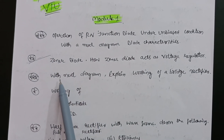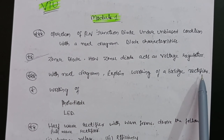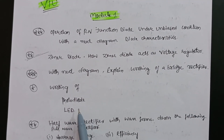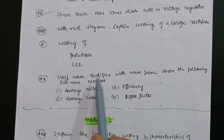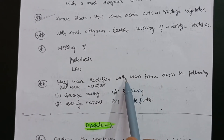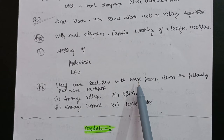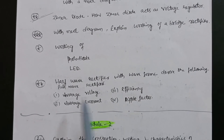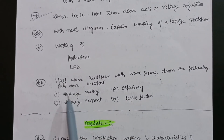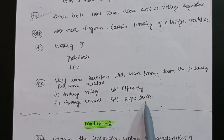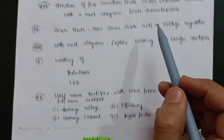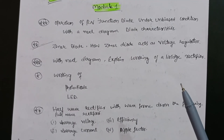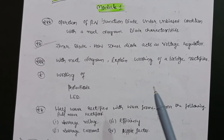The next question is: with a neat diagram, explain the working of a bridge rectifier, and also the working of a photodiode and light emitting diode. Also important are the half-wave rectifier and full-wave rectifier — with waveforms, draw the diagrams and derive the average voltage, efficiency, average current, and ripple factor. This content is enough for Module 1; the full syllabus is vast for Basic Electronics.